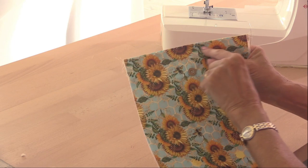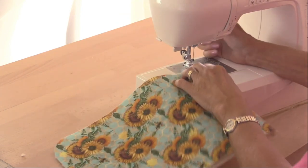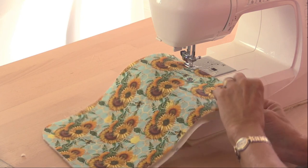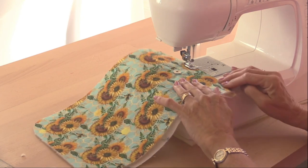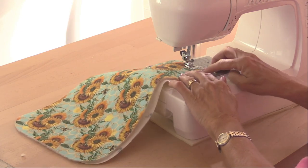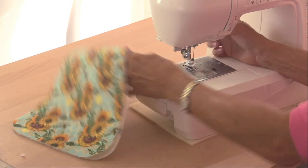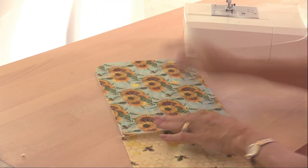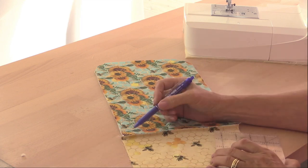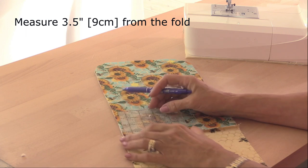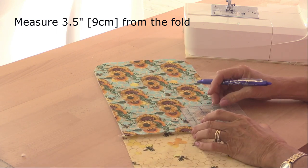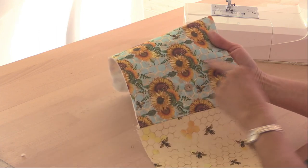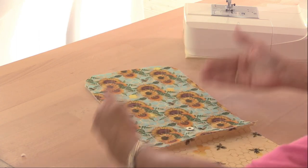Then I'm going to topstitch straight across here and that's a couple of millimeters or about an eighth of an inch from the seam. And open it out. Then I'm going to measure three and a half inches along the side and draw a line. You don't have to draw a line but that gives you an idea of where I'm going to fold this.